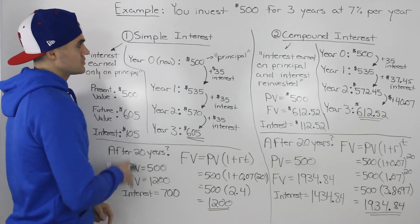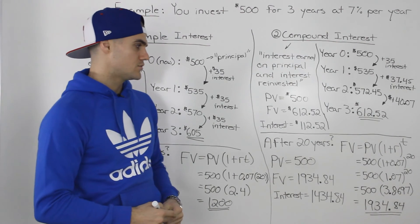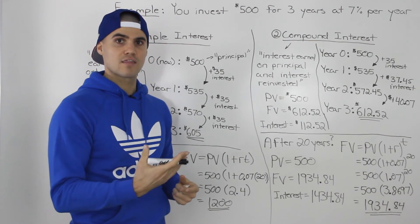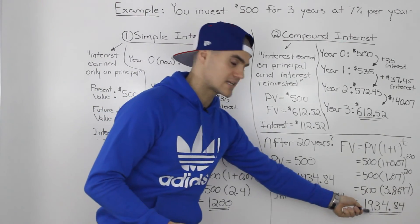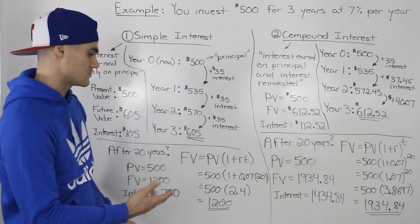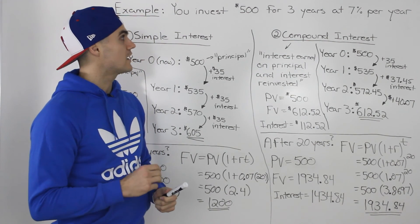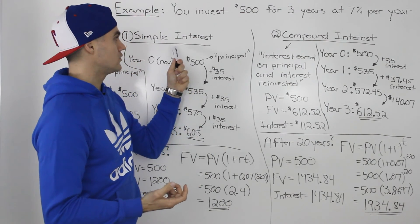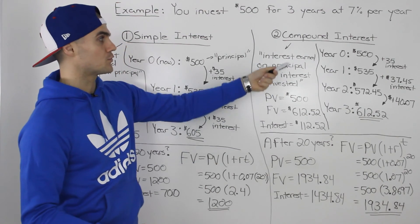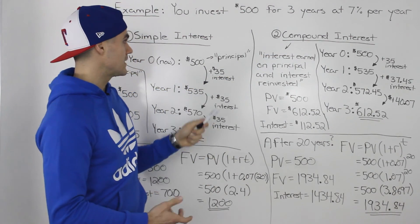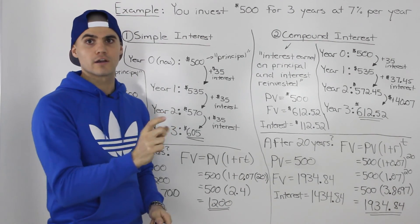A couple of examples illustrating simple interest and compound interest and their differences. Make sure you write down these formulas because you will be using them. If a question asks for the difference between simple and compound interest after 20 years, you'd subtract: the difference would be $734.84. Also, whenever a question doesn't specify simple or compound interest, always assume compound interest — simple interest should be stated explicitly.